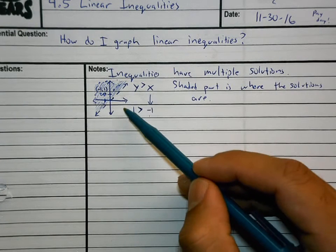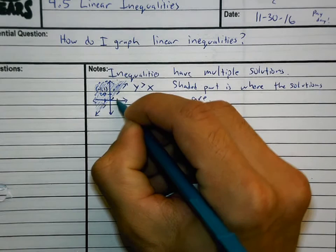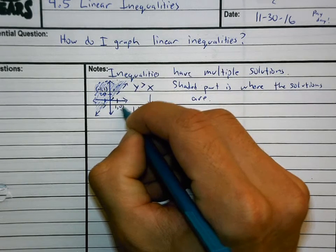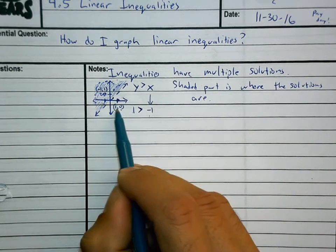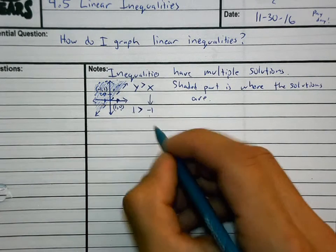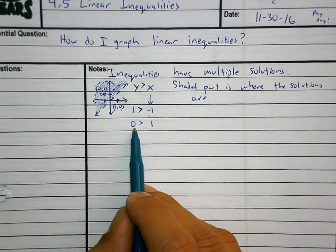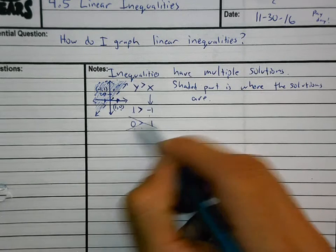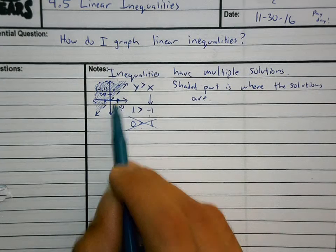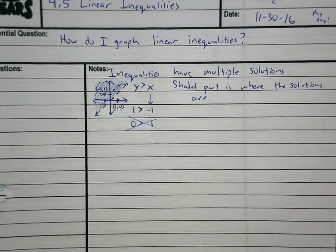There are equal amounts of wrong answers as well — the ones on this side of the line don't work. If I try to use this point right here, which is one comma zero, and plug in one for x and zero for y, is zero greater than one? No — that's not a solution. There are an infinite number of non-solutions on the non-shaded side.